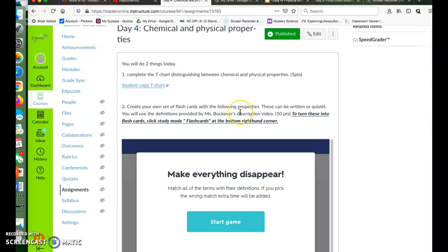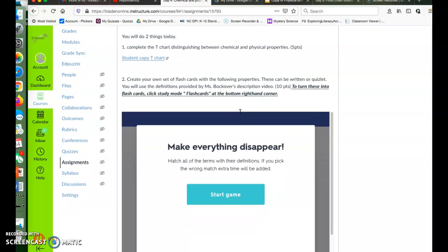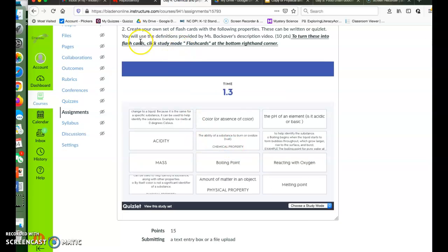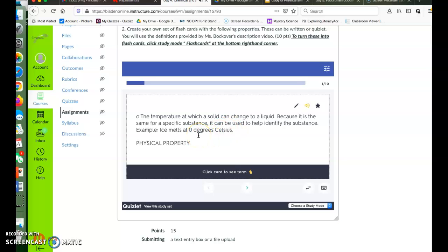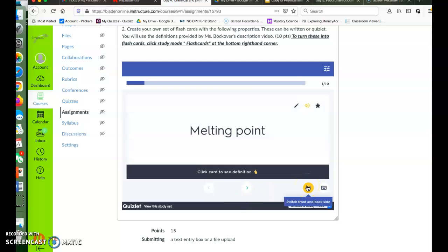You're going to create your own set of flashcards with the following properties. These can be written or on Quizlet. Written is better though. If you're in class, we're going to actually write them. You are going to use the definitions provided by Ms. Backover in this Quizlet. To turn these flashcards from the game to the actual flashcard of the Quizlet, you're going to go choose study mode right here and you're going to go flashcards. And then you'll see the flashcard right here. There's the definition. Flip it over. Melting point.